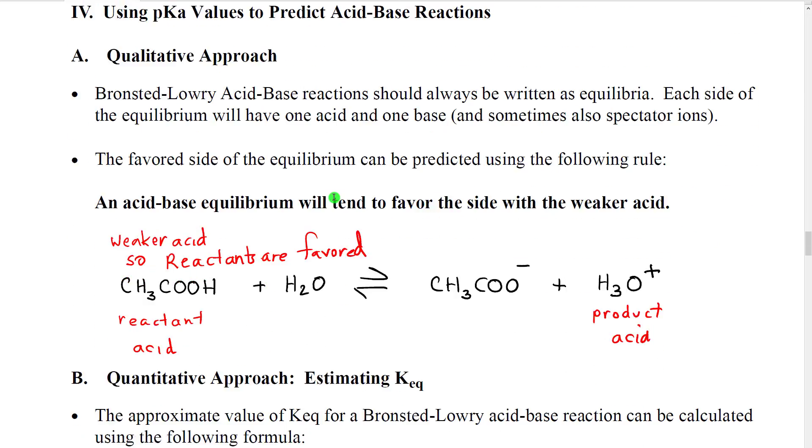Now, once we have a table of pKa's, we can predict the results of a given acid-base reaction. We're going to look at two ways of predicting this. One is qualitative, in other words, we're just going to determine which side of the equilibrium is favored. And one is more quantitative, where we can even get a rough estimate of the value of K-equilibrium.